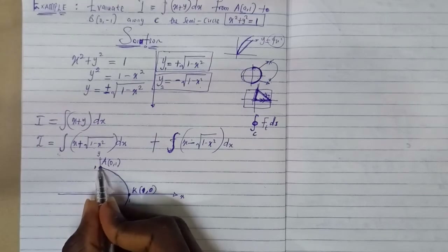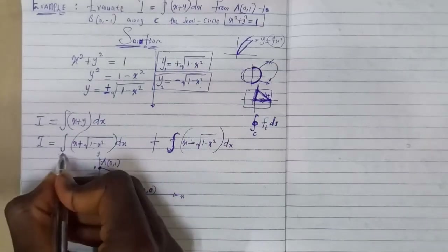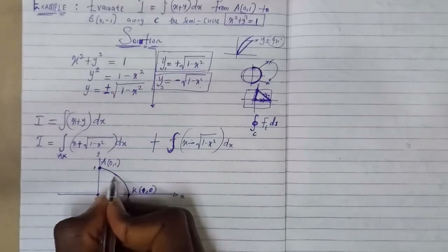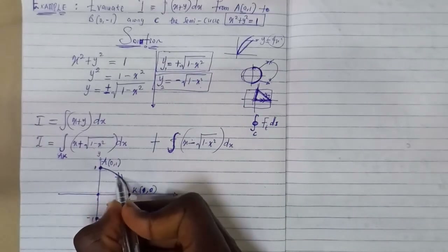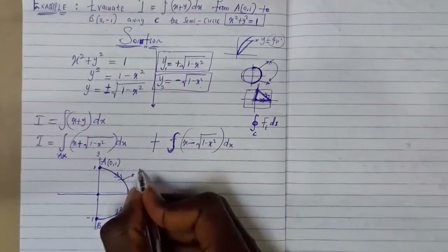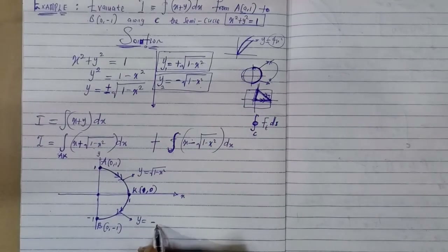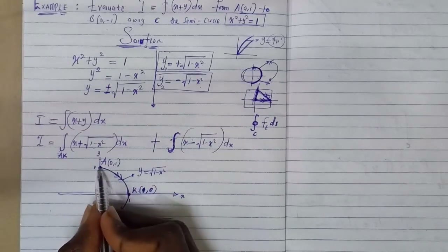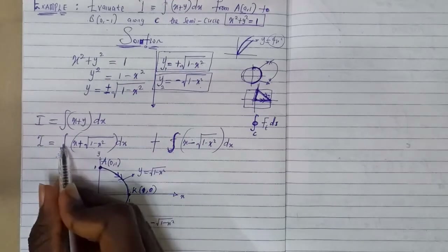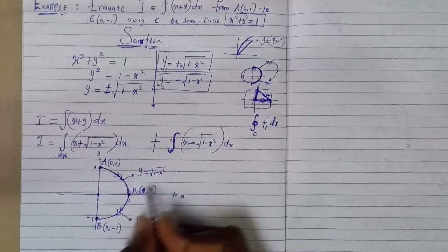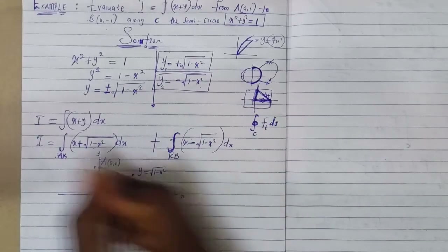We evaluate the integral in two parts. Along arc A to K (upper semi-circle), y is the positive result √(1 − x²). Along arc K to B (lower semi-circle), y is the negative result −√(1 − x²). The upper arc A to K uses y = √(1 − x²), and the lower arc K to B uses y = −√(1 − x²). We then add the two results by the property of line integrals.